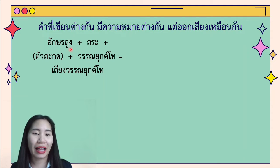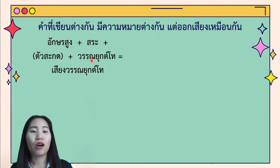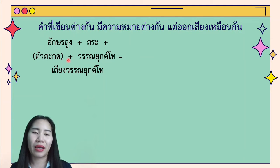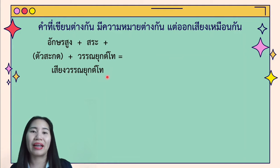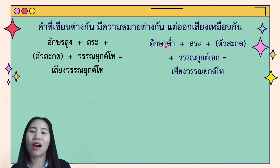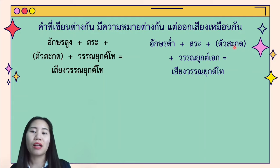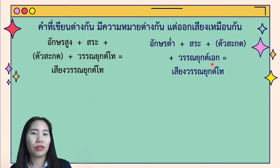อักษรสูง is the high class consonant. สระ is the vowel. ตัวสะกด is the final consonant. วรรณยุกต์โท is tone mark 2. When they are all together, you will get เสียงวรรณยุกต์โท — it is falling tone. Now it has the same sound with อักษรต่ำ, the low class consonant. When a low class consonant stays with a vowel, final consonant, or วรรณยุกต์เอก (tone mark 1), you will get the same falling tone.